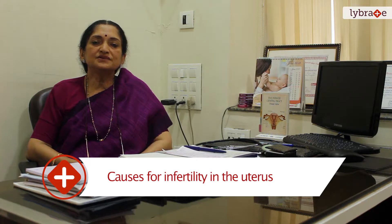The uterus is the main important organ of the female genital tract and it has two parts. The upper part is called the body of the uterus and the lower part is called the cervix. The upper part of the uterus has three layers from outside to inside: the outermost layer is called the serosa, the middle layer is the myometrium, and the inner layer is the endometrium.